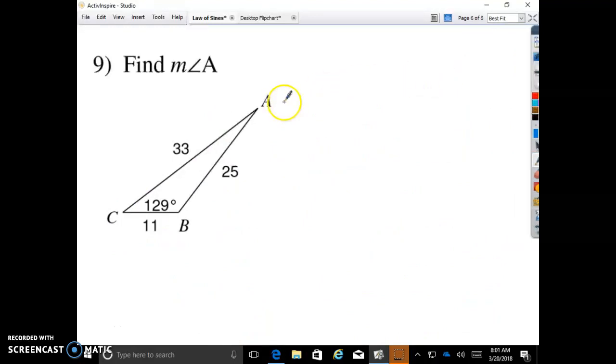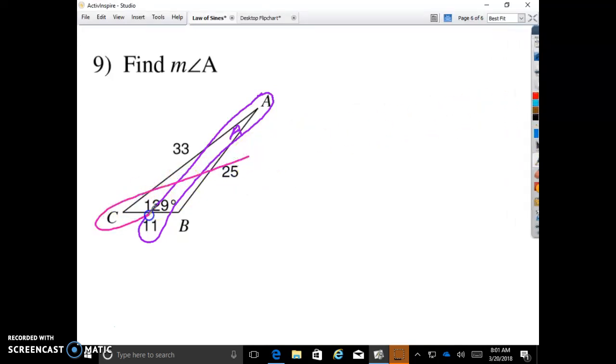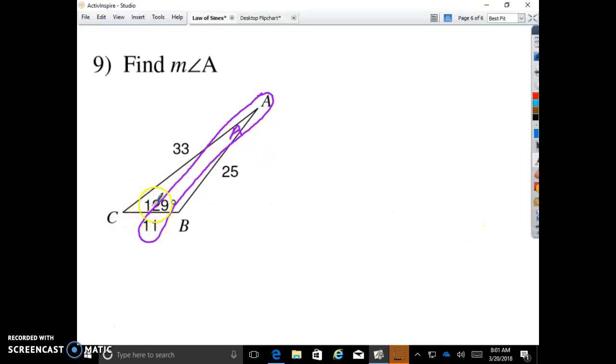Let's take a look at number nine, the measure of angle A. So angle A is right here. And A goes with 11. What else can we use? We can use the C with the 25, right? We could use 25 with the 129. Oh wait, is the 129 in C? Where do you think that 129 goes being that it's obtuse? That's definitely the B. Even though it's written more towards the C, it definitely has to be the B because that's the obtuse angle. So that actually is going to go with the 33. So you have to just be careful. Their pictures are not always great. Sine of 129 is to 33 as sine of A is to 11.